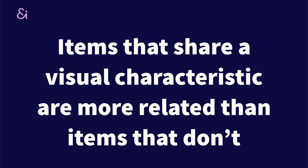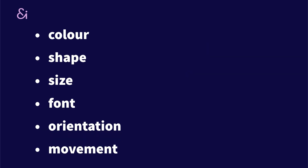This principle is all about relationship and sharing visual characteristics. Items that share a visual characteristic are more related than items that don't. We're talking about things that share the same shape, color, or font. Some of the characteristics we're thinking about are color, shape, size, font, orientation, and of course movement.